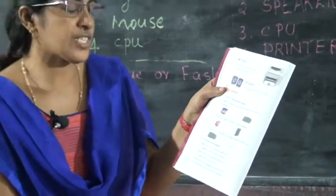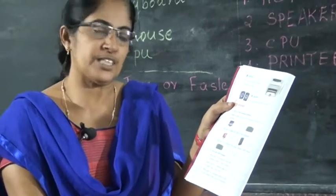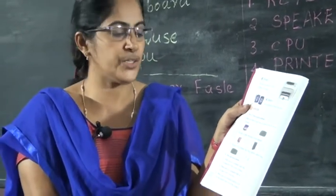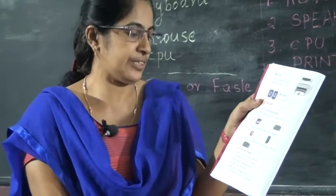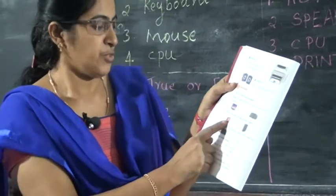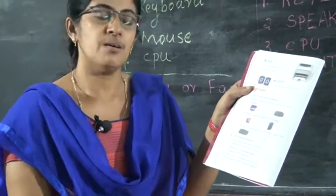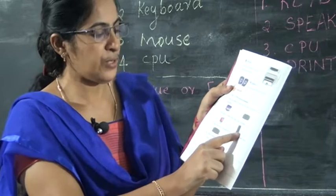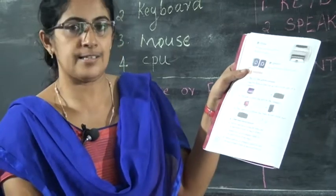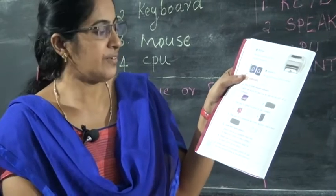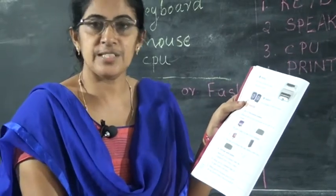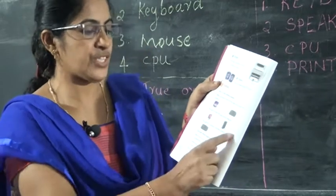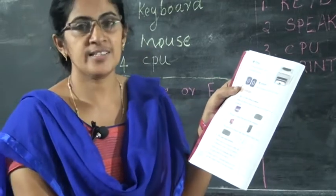Second question: this part is called the brain of computer. The answer choices are monitor, CPU, and hard disk. The brain of the computer is the CPU. The second picture is the correct answer.